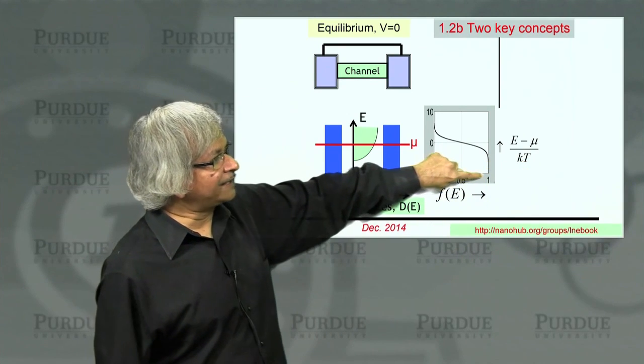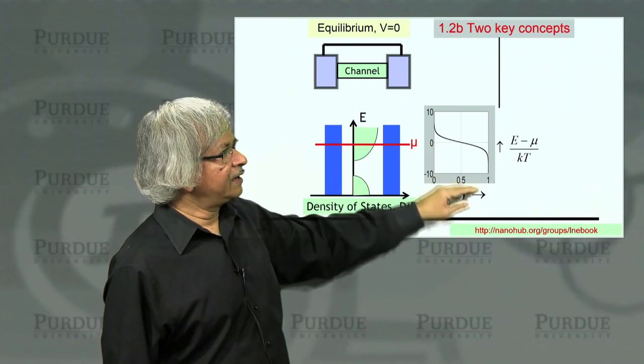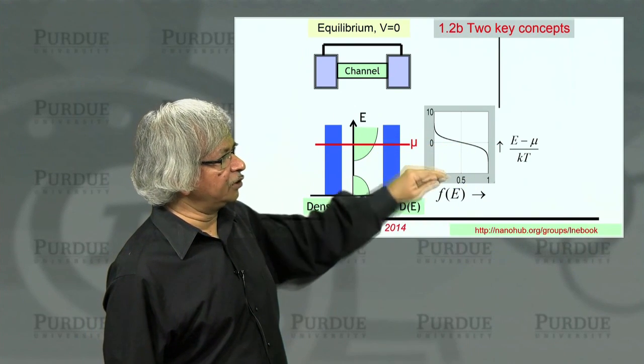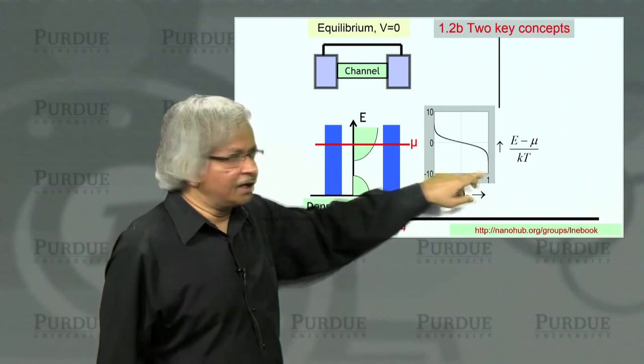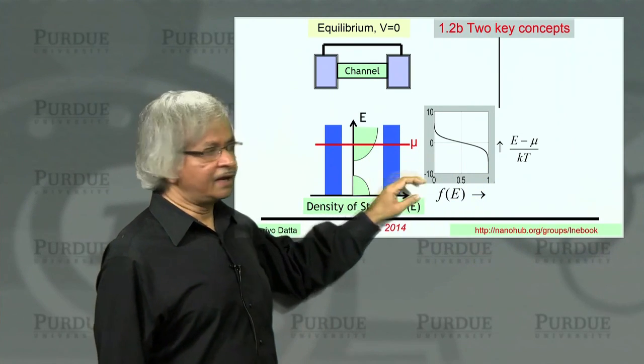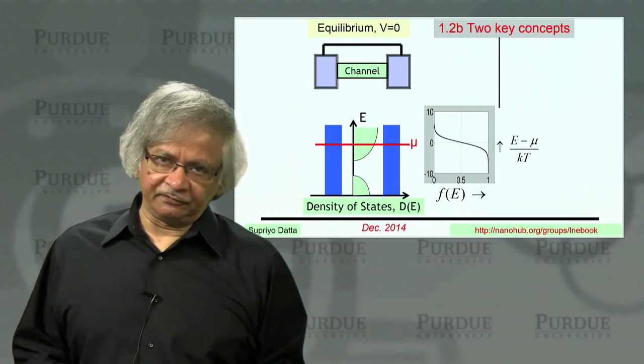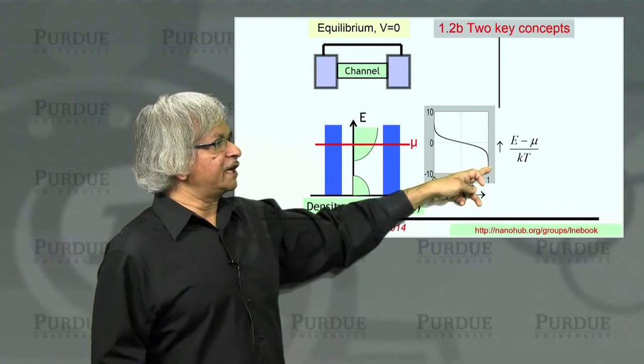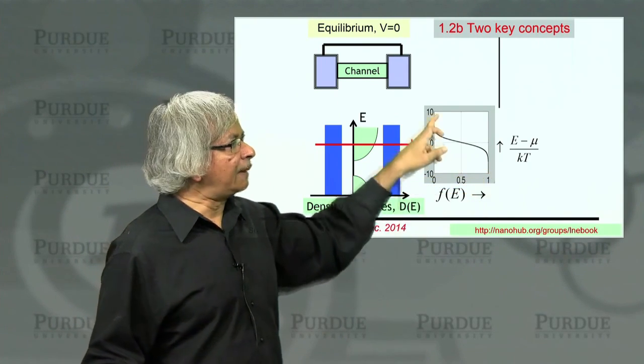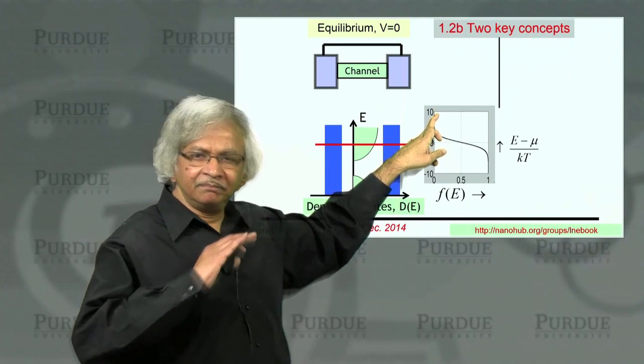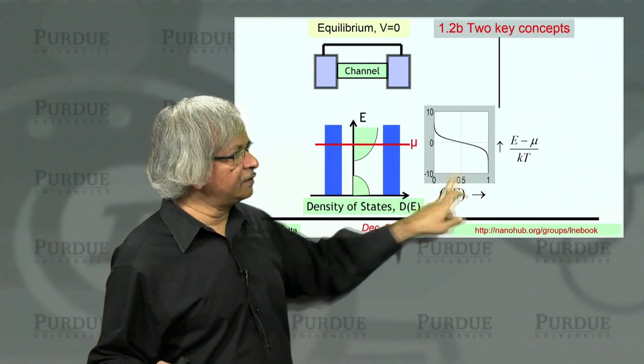And the actual mathematical function describing this, you see, this function you'll notice at energies far below mu is 1. And that's what you'd expect. Because far below mu, all states are filled. And what this function tells you is what fraction of the states are filled. So down here, we expect 100 percent to be filled. So the function is 1. Up here, we expect them to be completely empty. And so the function is 0. So the function goes from 0 to 1.